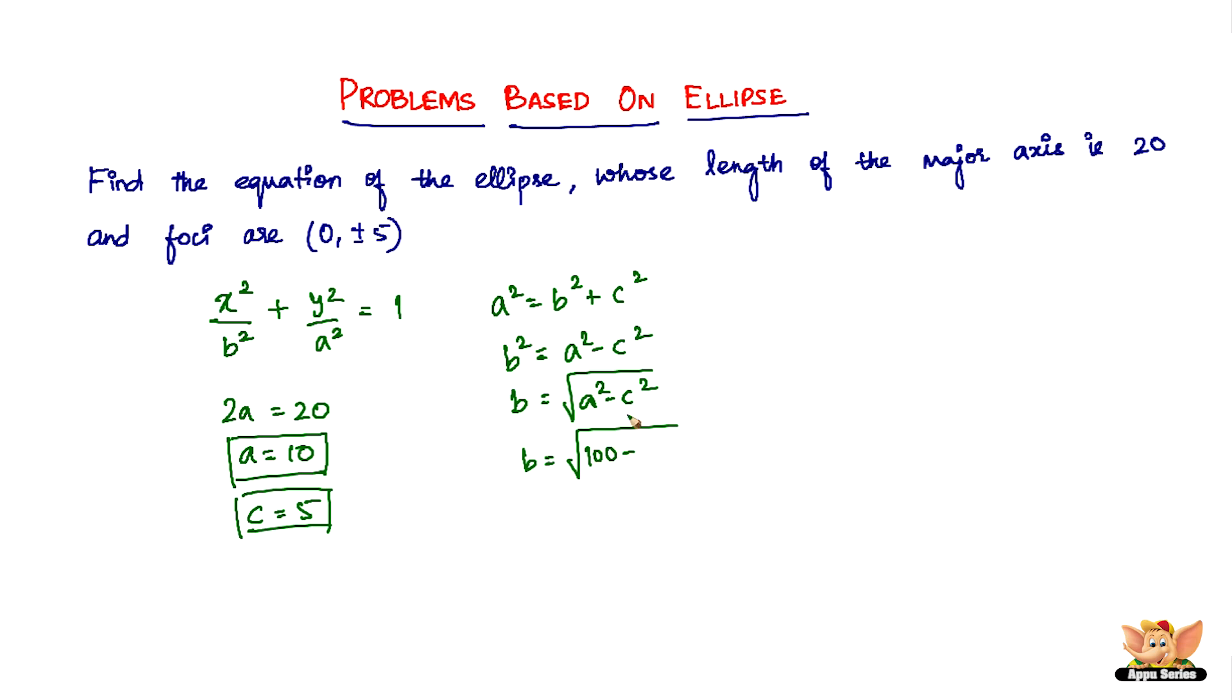So b equals square root of a squared minus c squared which is equal to, a is 10 so a squared is 100 minus c is 5 so c squared is 25. So b equals square root of 75 or b squared equal to 75 because that's what we actually want.